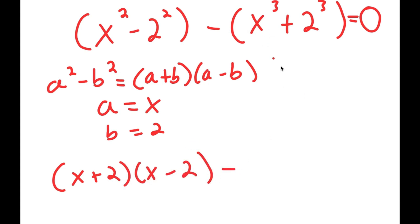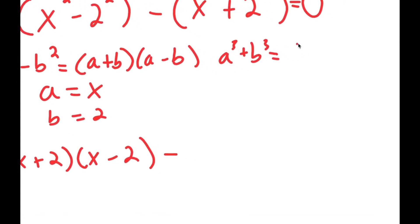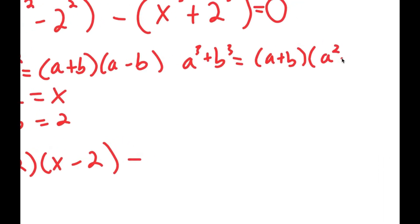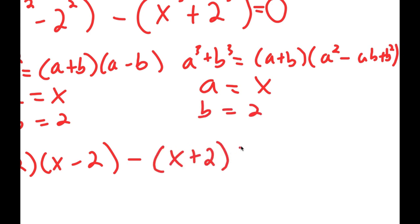Now I have this minus — if I have something in the form a to the power of 3 plus b to the power of 3, this is equal to a plus b times a squared minus ab plus b squared. So in this case, a is x and b is 2, giving me x plus 2 times x squared minus 2x plus 4. And this is equal to 0.